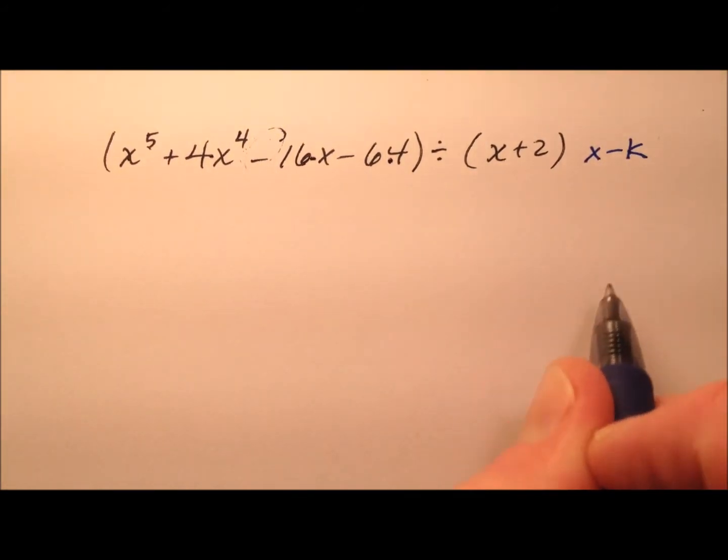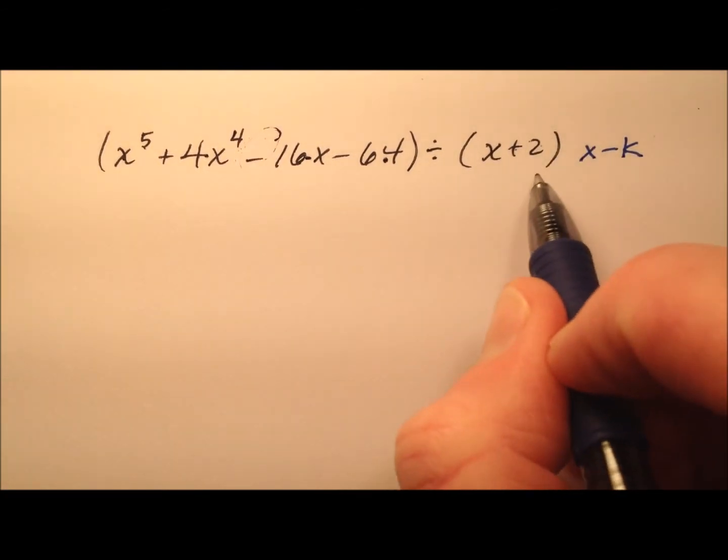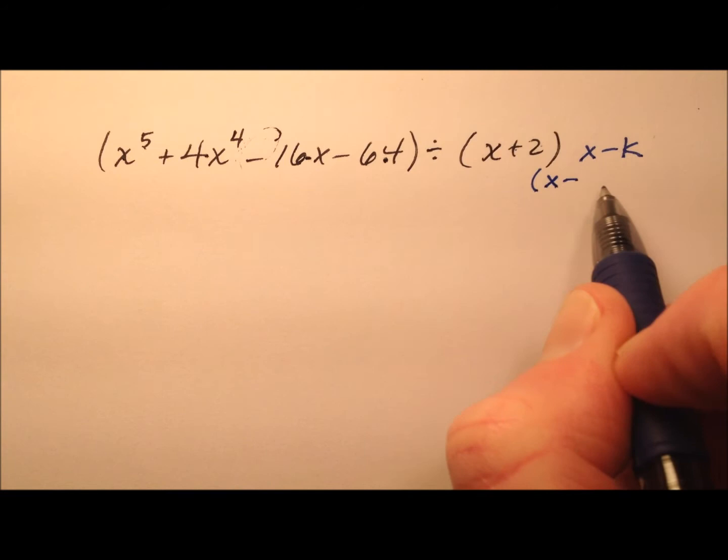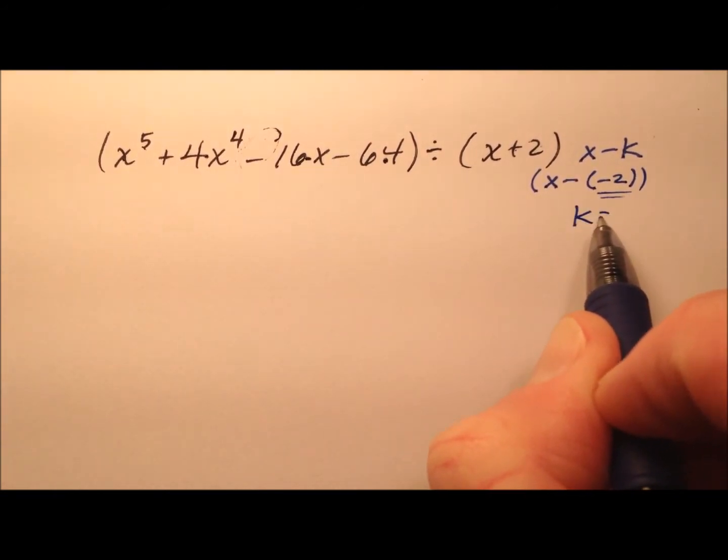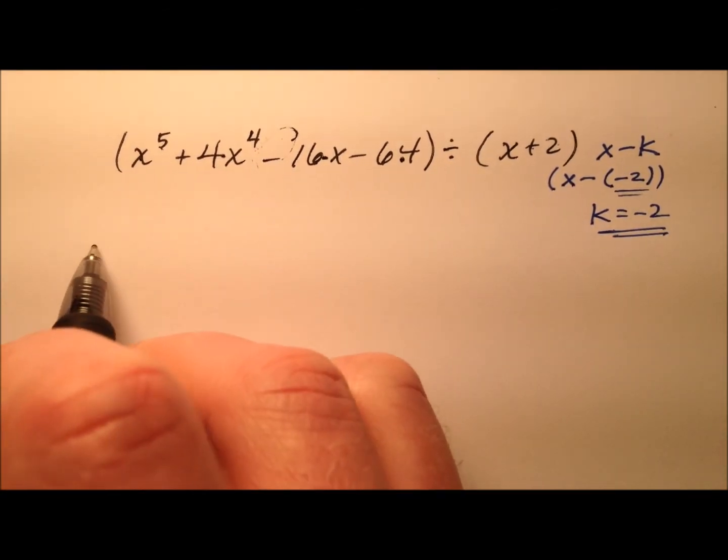It needs to be an x minus k form, so I can grab my k value. This is x plus two, so I need to say x minus negative two, so my k value is negative two. Let's drop that negative two out front here.